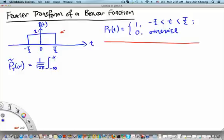and integral from minus infinity to infinity, p capital T of t, the boxcar function with capital T, and then e^(iωt) dt. This is nothing. We're just merely writing down the definition of the Fourier transform.